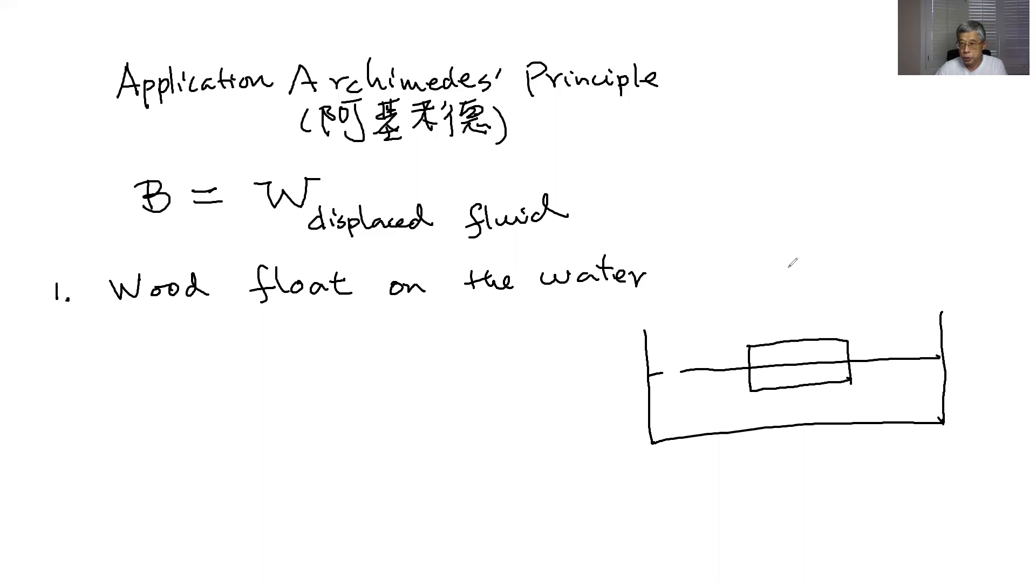And let's just assume the density of the wood is, I'm just going to give an example, say 500 kilograms per meter cubed for this particular wood. And the water's density is 1000 kilograms per meter cubed.